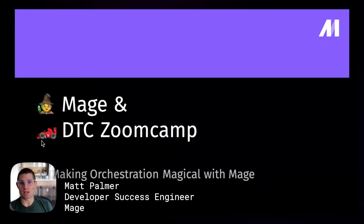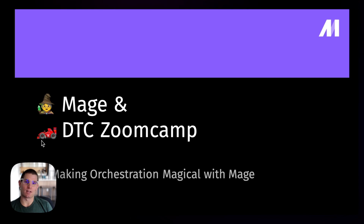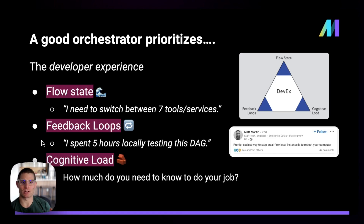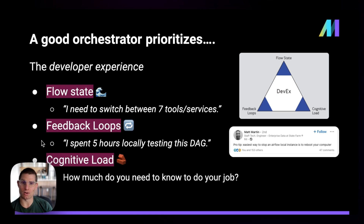Hey, it's Matt, and we're back for the second video in the Data Talks Club Data Engineering Zoom Camp Chapter 2 on data orchestration. Today I'm going to be talking about Mage, specifically what is Mage and how does it work. This is going to follow really nicely from our earlier chat on the developer experience, because Mage was built with a lot of these principles in mind: flow state, feedback loops, and cognitive load. The entire experience is designed to minimize cognitive load, improve the ability to iterate quickly on pipelines, and build data workflows that have software engineering best practices in mind.